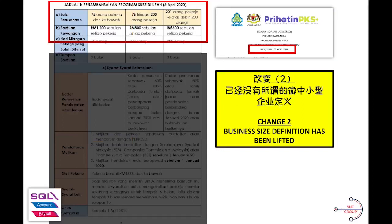Key changes number two. In the initial guide issued out, Perkeso classified employers into a few categories, which include micro and small businesses, medium businesses, and also large businesses. But now, all these definitions have been lifted. They only look at the size based on the number of employees.